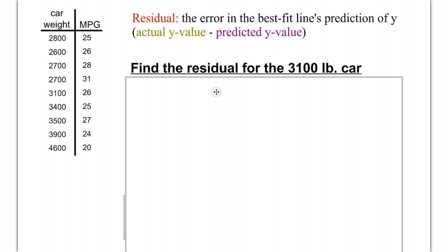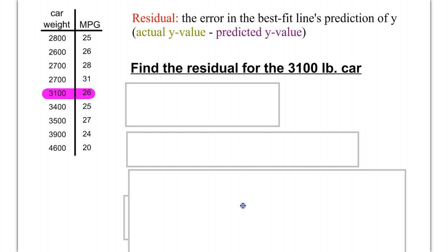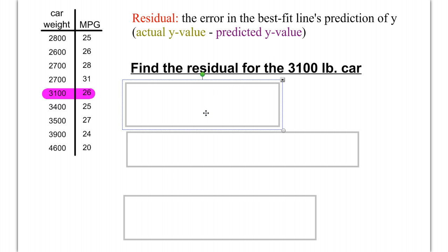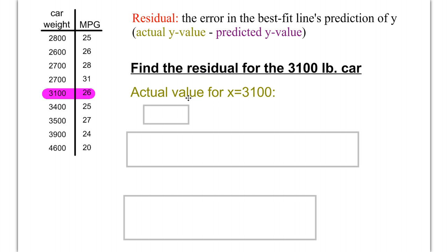So, to find the residual for the 3,100-pound car, we're going to first of all identify where is that in our table. Okay, right here. So, we'll end up needing that in a moment. First thing we're going to pull away is the actual value when x equals 3,100. We look at our table here, the actual MPG when x is 3,100 is 26. Y equals 26.